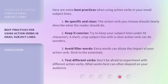Here are some best practices when using action verbs in your email subject lines. 1. Be specific and clear — the action verb you choose should clearly describe what the reader should do. 2. Keep it concise — try to keep your subject lines under 50 characters; a short, crisp subject line with a clear action verb can do wonders. 3. Avoid filler words — extra words can dilute the impact of your action verb, so stick to the essentials. 4. Test different verbs — don't be afraid to experiment with different action verbs, as what works best can often depend on your audience.